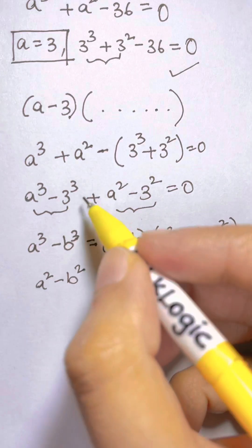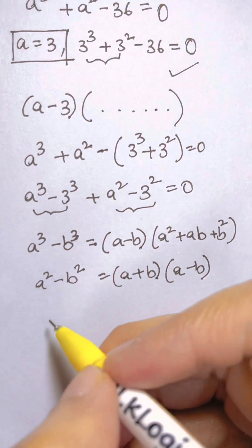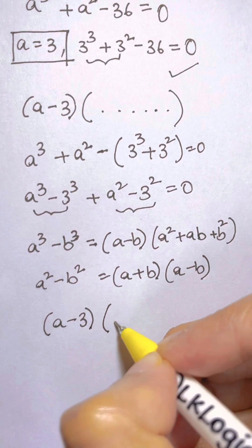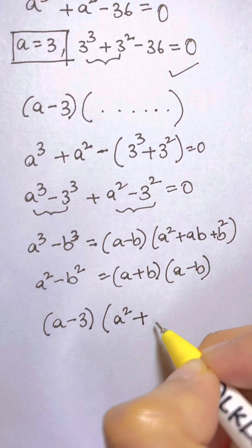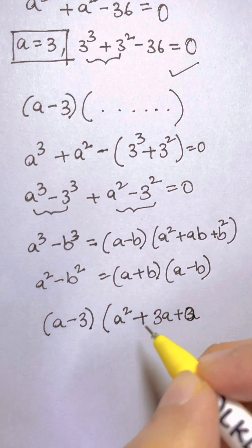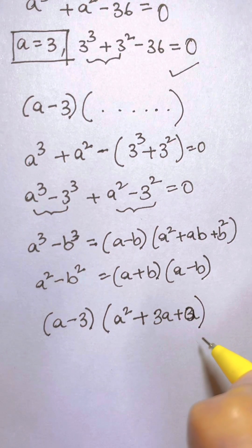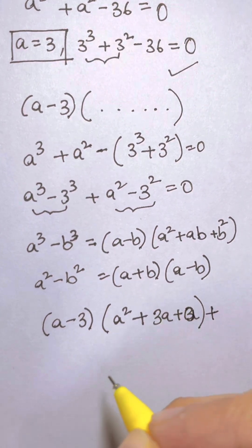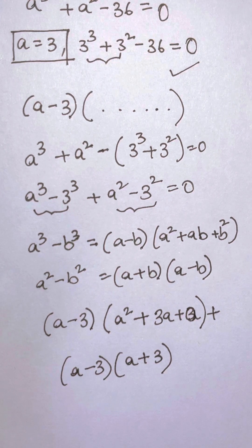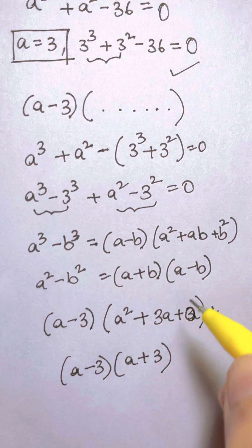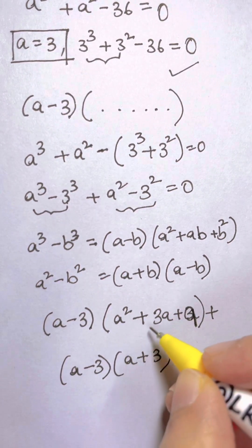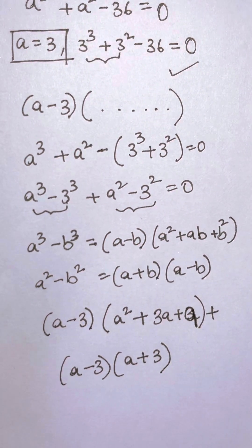Now I am going to substitute in this a³ - b³. This is your a, this is your b. So it is a - 3 times a² + 3a plus 3². So we have a² + 3a + 9. Plus, I am going to write a - 3 and a + 3. That is (a + b)(a - b). Here we have (a - 3)(a² + 3a + 9) + (a - 3)(a + 3).